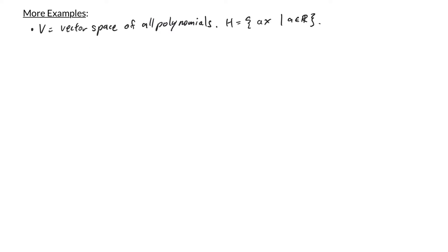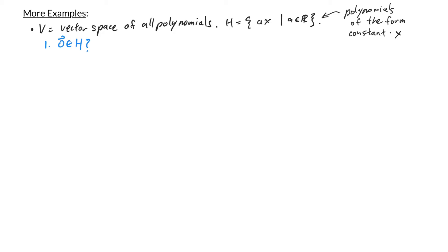In our next example, V is the vector space of all polynomials, and H is the subset consisting of polynomials of the form A·x, where A is any real number — so H consists of polynomials that are some constant times x. For the first condition, is the zero vector in H? The zero vector in the vector space of polynomials is just the constant 0. And 0 is in H because 0 can be thought of as 0 times x, which is a constant times x.